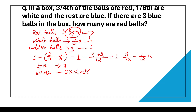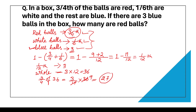Now, this question is asking how many are red balls. The fractional form of red balls is three-fourths. So, three-fourths of thirty-six equals three-fourths multiplied by thirty-six, which equals twenty-seven. Twenty-seven balls are red balls.